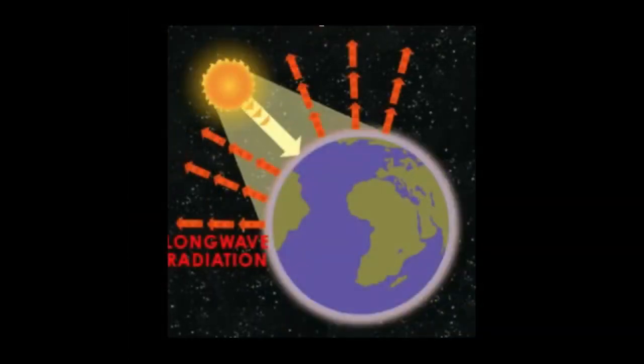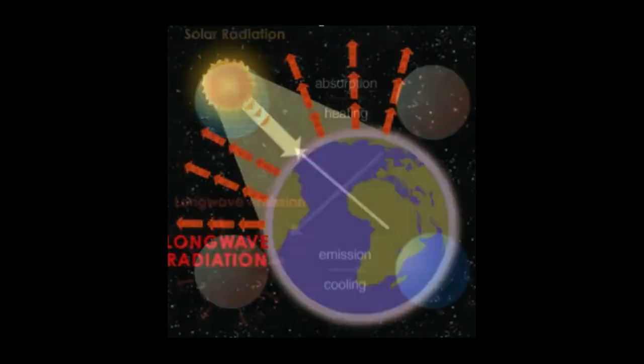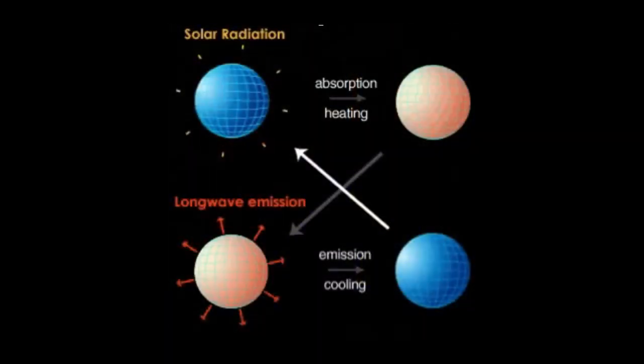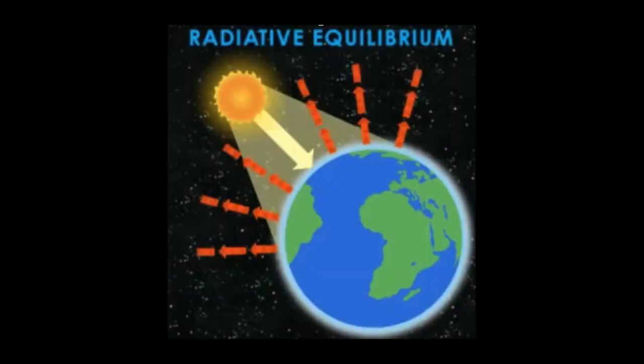By absorbing sunlight, earth's surface heats up. Our planet re-emits the energy it has absorbed back to space as longwave infrared radiation. Absorption of shortwave solar energy causes heating. Emission of longwave terrestrial radiation causes cooling. This balance between incoming and outgoing radiation creates a state of equilibrium. This balance between incoming and outgoing energy is called radiative equilibrium by scientists.